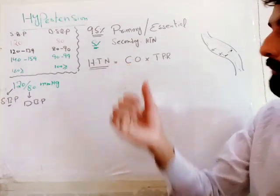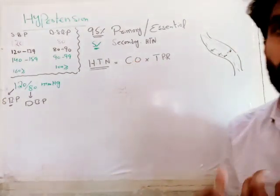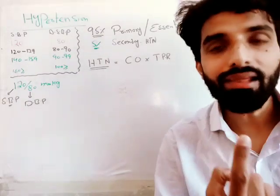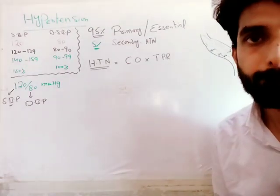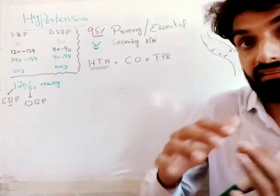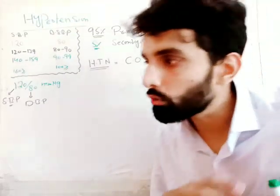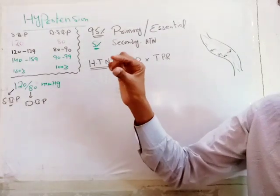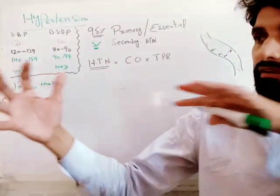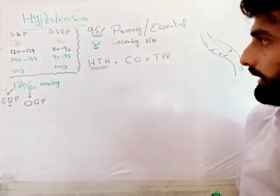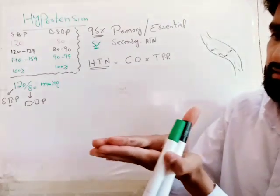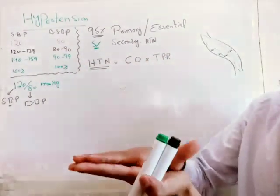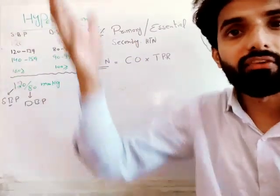Blood pressure is basically cardiac output multiplied by TPR — Total Peripheral Resistance. Cardiac output is the amount of blood pumped by the heart in one minute. Total Peripheral Resistance is the resistance faced by blood while moving through the blood vessels. For example, if a blood vessel has been stenosed or has plaque, blood will face resistance. If the blood vessel is dilated, TPR is reduced; if constricted, TPR is increased.